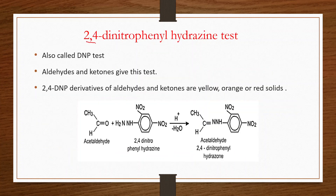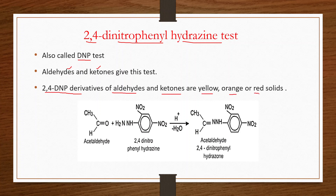Next is the 2,4-dinitrophenylhydrazine (DNP) test. Aldehydes and ketones give this test. The 2,4-DNP derivatives of aldehydes and ketones are yellow, orange, or red solids. For example, acetaldehyde reacts with 2,4-dinitrophenylhydrazine to give acetaldehyde 2,4-dinitrophenylhydrazone.